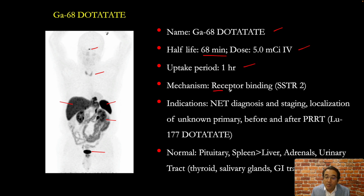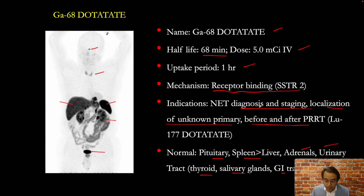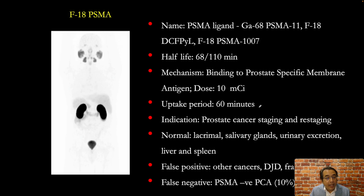The mechanism of uptake is receptor binding to somatostatin receptor subtype 2. The applications for this study include neuroendocrine tumor diagnosis and staging, localization of unknown primary, and before and after peptide receptor radionuclide therapy using high-dose lutetium-177 dotatate. Normal uptake is seen in the pituitary, spleen (more intense than the liver), adrenals, urinary tract excretion, and faint activity in the thyroid, salivary glands, and GI tract.